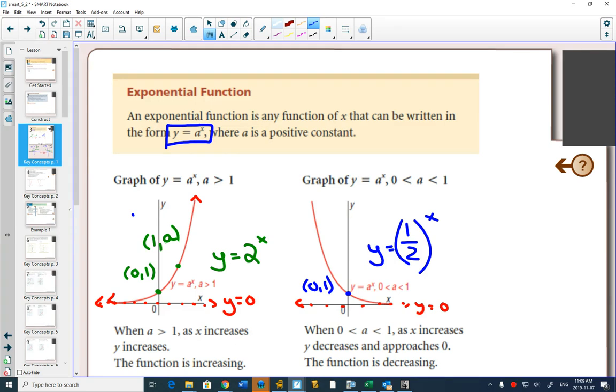But now when I plug in 1 for x, I would get 1 half comma 1, or a comma 1, same thing as before, whatever your base is. But since 1 half is less than 1, this makes this function decreasing.